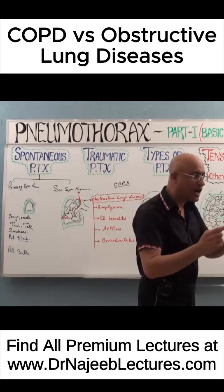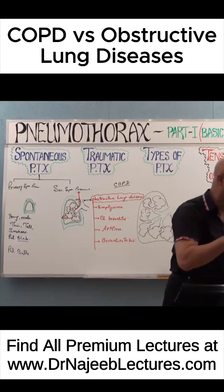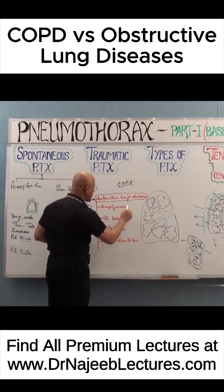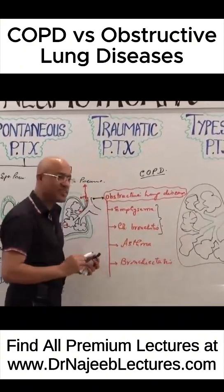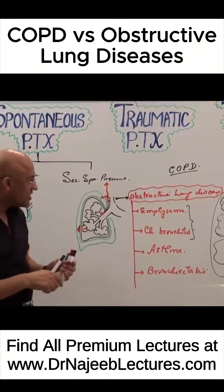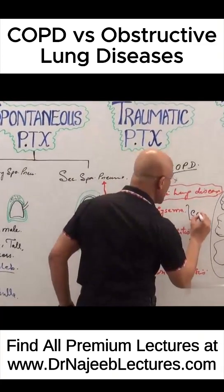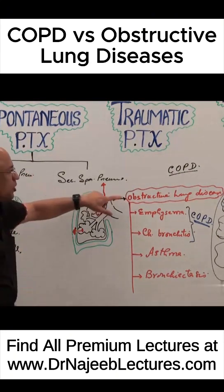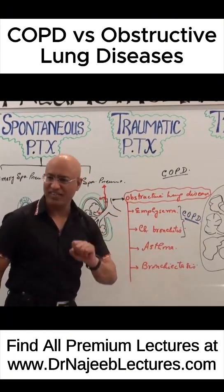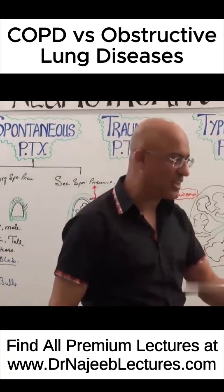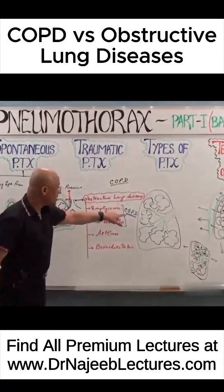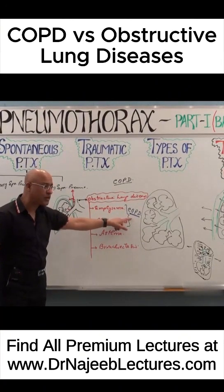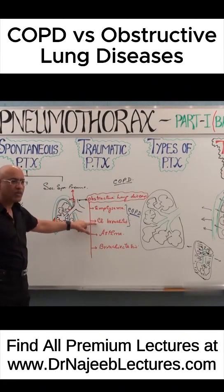Not all diseases that produce obstruction to airflow in the lung are chronic obstructive pulmonary diseases. When we talk about COPD, we are talking classically about these two — emphysema and chronic bronchitis. Obstructive lung diseases more broadly include COPD, asthma, and bronchiectasis, while COPD specifically and mainly includes emphysema and chronic bronchitis.